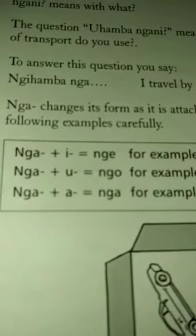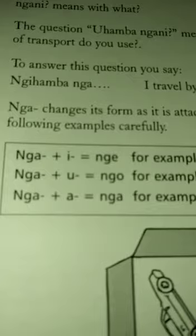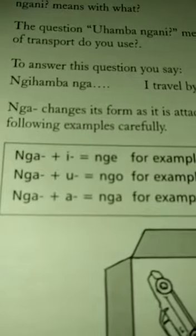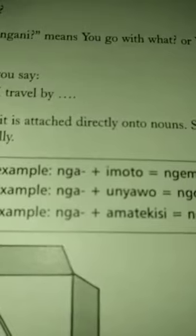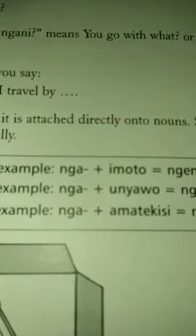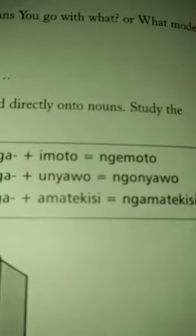Nga plus a noun starting with the letter u changes to ngo. By foot: nga plus unyawo becomes ngonyawo.